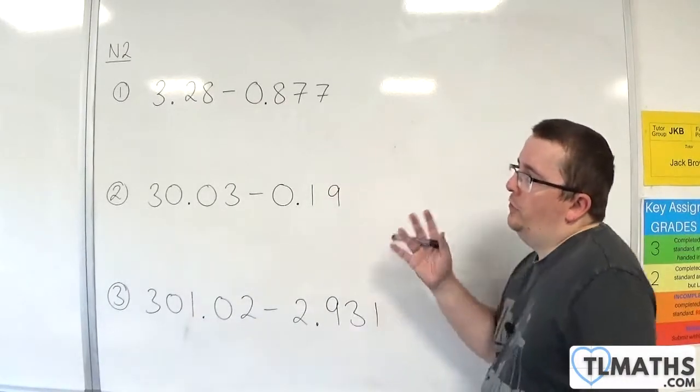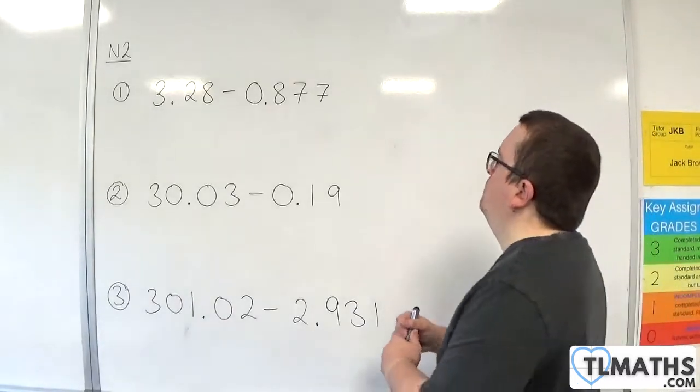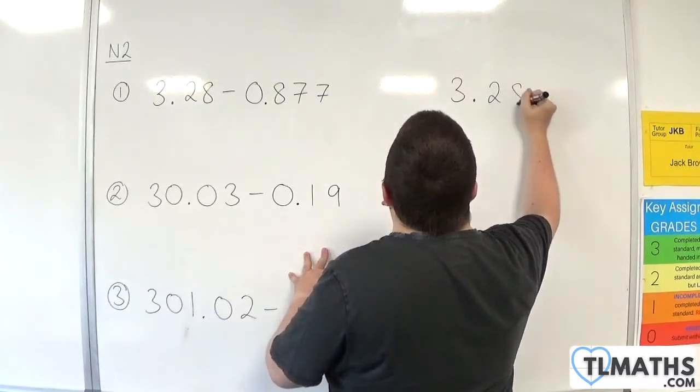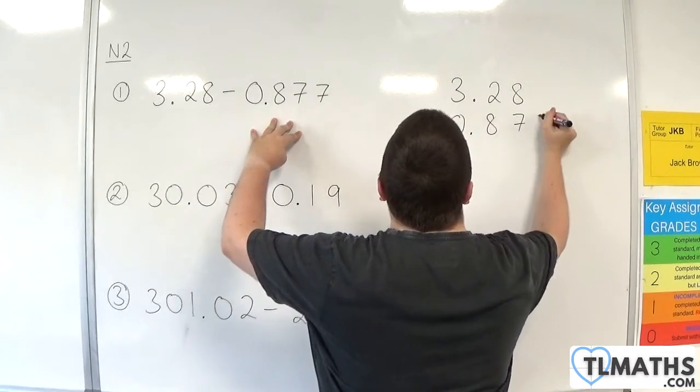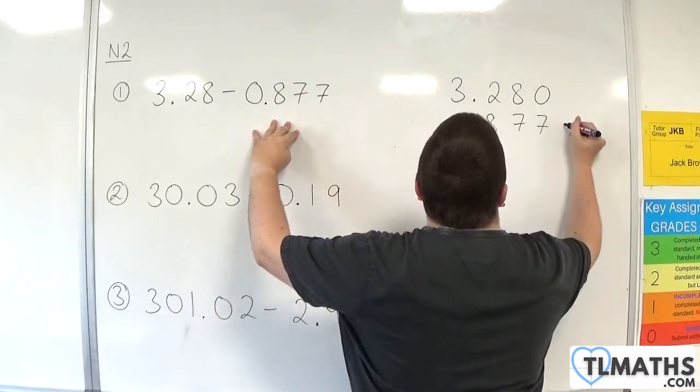In this video, we're going to go through three more examples of subtracting with decimals. We have 3.28 minus 0.877. Make sure the decimal points line up and fill in any gaps with zeros.